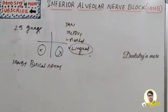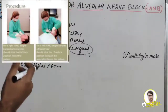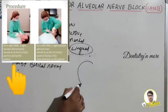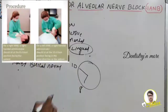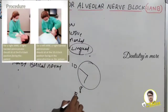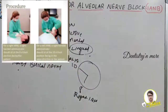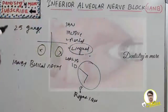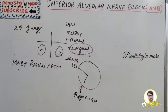For a right inferior alveolar nerve block, a right-handed dentist should sit at the eight o'clock position facing the patient. For a left IANB, the position is ten o'clock. The patient should be in a supine or semi-supine position, with the mouth open wide to permit greater visibility and access to the injection site.